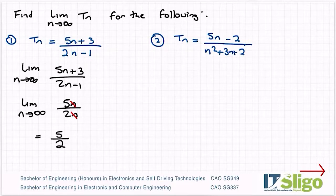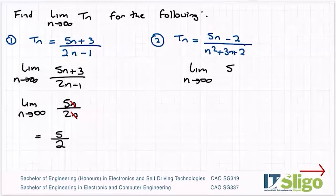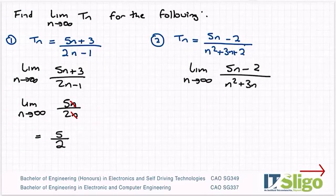Let's have a look at question 2. Let's evaluate this one. So the limit as n tends to infinity of 5n minus 2 over n squared plus 3n plus 2. So again, like before, the minus 2 is going to have no bearing on the top.